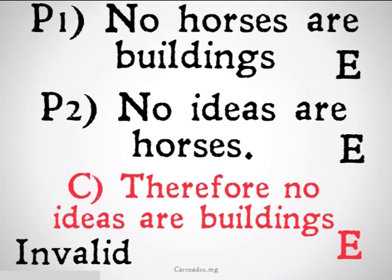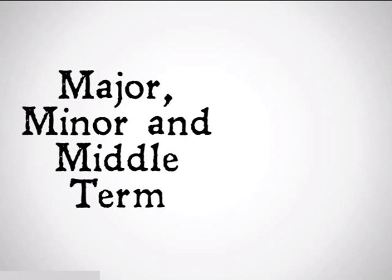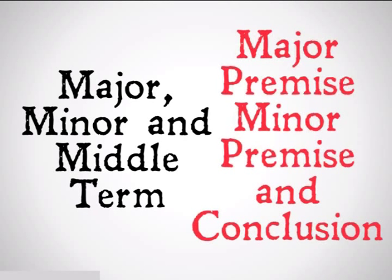Categorical syllogisms always have two premises and a conclusion. We're going to understand why that is and what that looks like in the following videos on major, minor, and middle term, as well as the major premise, the minor premise, and the conclusion.